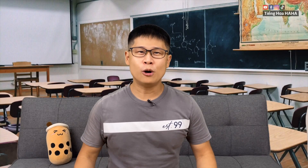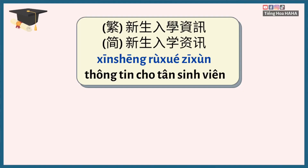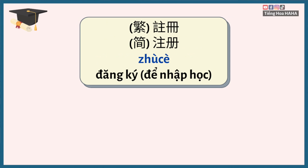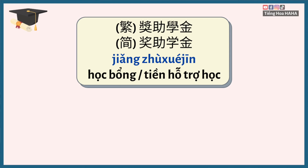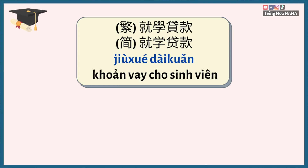完成以上步驟後，你就可以準備到新生入學資訊網頁上看看。你會需要知道：註冊的時間、學雜費、新生訓練的時間及內容、獎學金的選項，或是申請就學貸款的方式和條件。